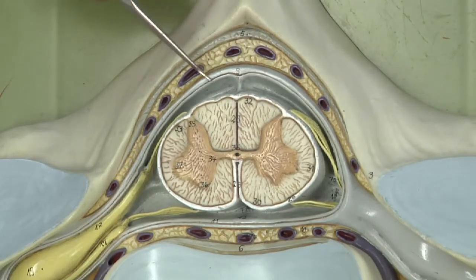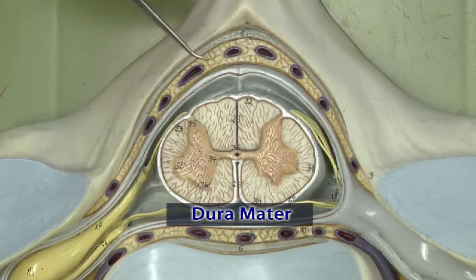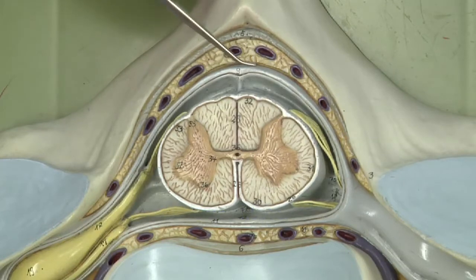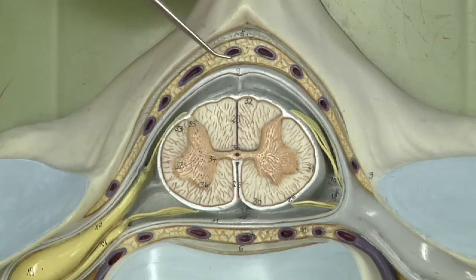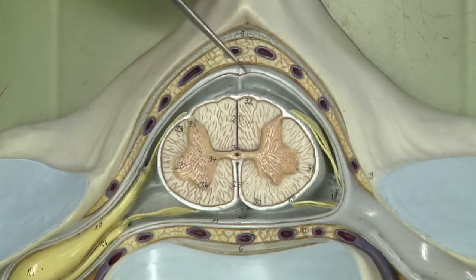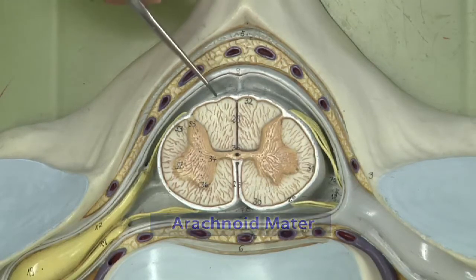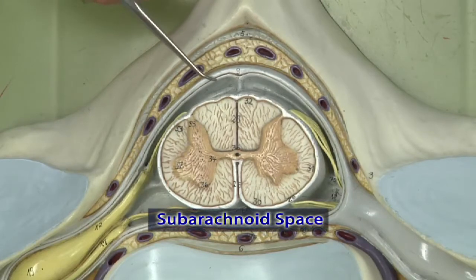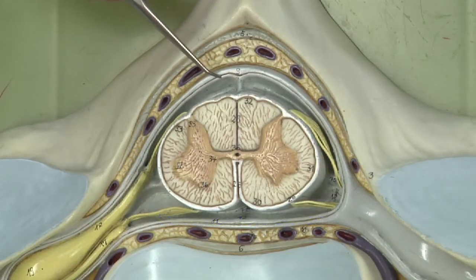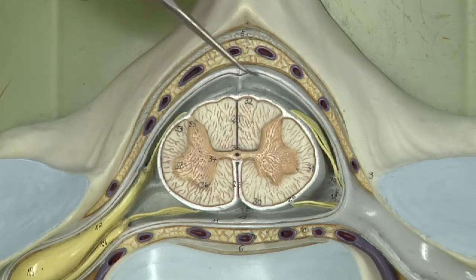Here is the first meninx, referred to as the dura mater. Dura mater literally translates to 'tough mother,' and it is essentially a protective sac around the spinal cord and, for that matter, the brain — it's continuous. Over here we have the arachnoid mater and the subarachnoid space. The arachnoid mater literally translates to 'spidery mother,' and there are essentially spidery connective tissues here through which cerebrospinal fluid courses.